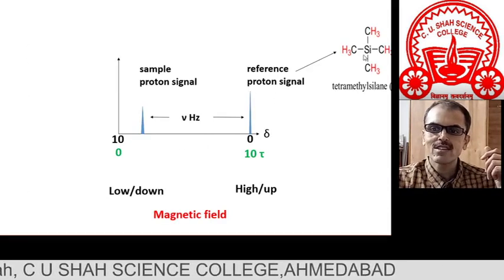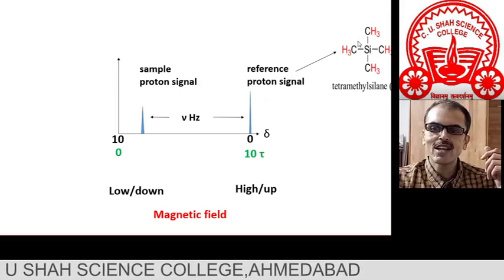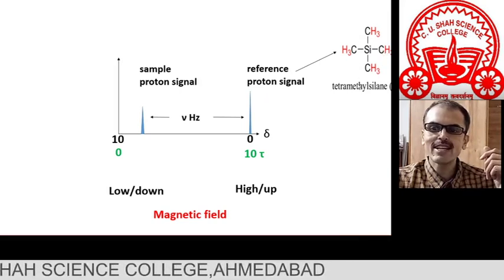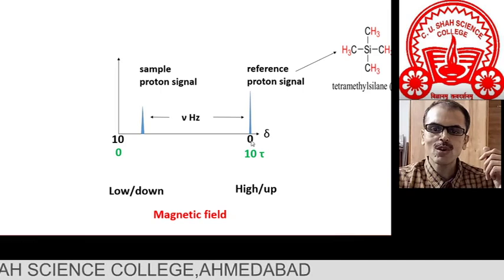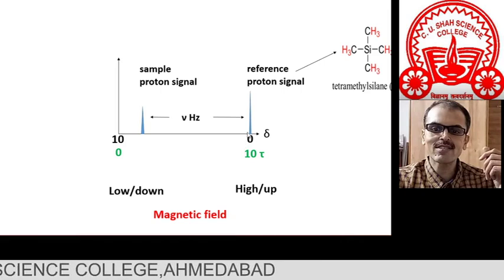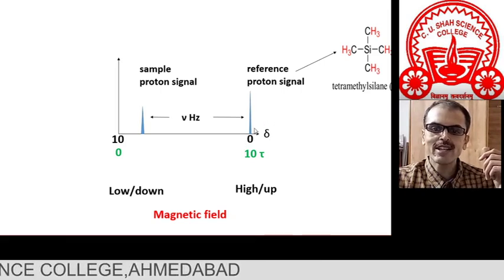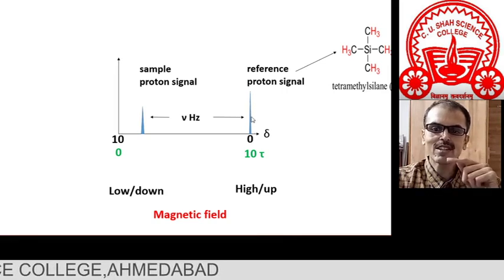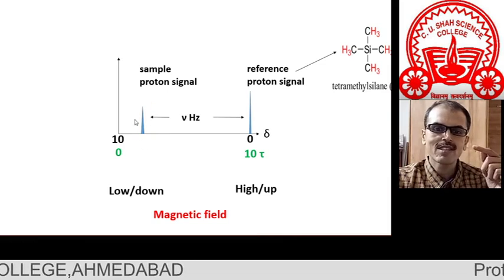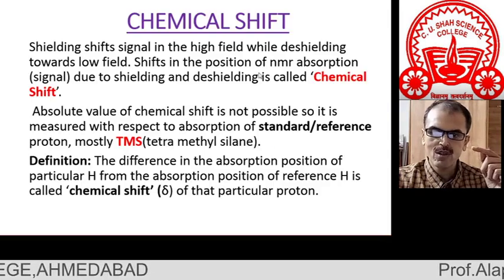Here it is — this is tetramethyl silane. You can see that there are four equivalent methyl groups, so they give rise to one NMR signal. The position of TMS is arbitrarily taken as zero on the delta scale. With respect to its position, we show the position of our sample signal. That is why TMS is called the reference proton.